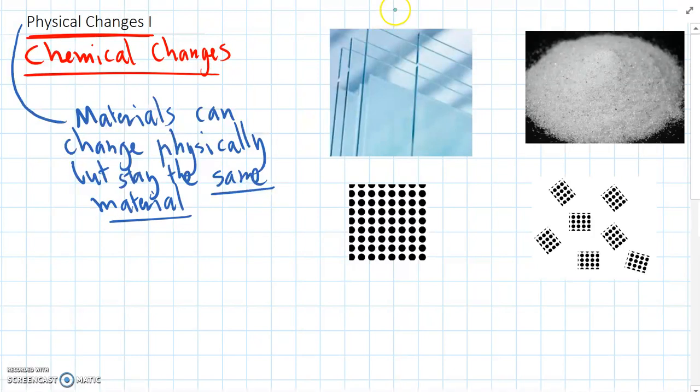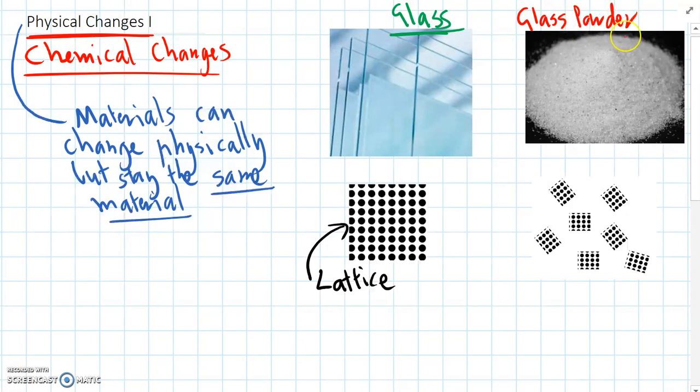So here's an example of a physical change with glass. Glass is made up of lots of particles here, and it's a lattice compound, which we've learned about before. And when you have one big piece of glass, it's just one continuous lattice. Lots and lots of atoms joined together throughout the whole piece of glass. But if we come along and smash up that glass and grind it into tiny pieces, then we can get left with glass powder here, which is really close to sand almost.